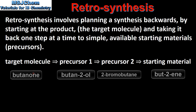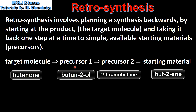In the previous example, the target molecule was butanone and the starting material was an alkene. Precursor 1 was butan-2-ol and precursor 2 was 2-bromobutane.